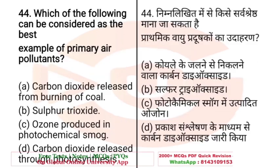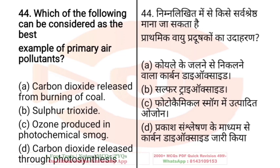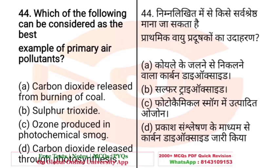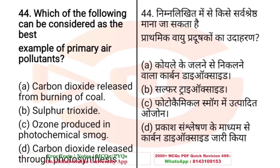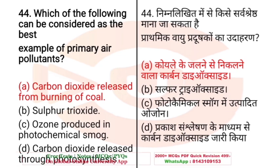Question: Which of the following can be considered the best example of primary air pollutants? A. Carbon dioxide released from the burning of coal, B. Sulfur dioxide, C. Ozone produced in photochemical smog, D. Carbon dioxide released through photosynthesis. The right answer is A — carbon dioxide released from the burning of coal. CO2 released after burning coal is considered the best example of primary air pollutants.